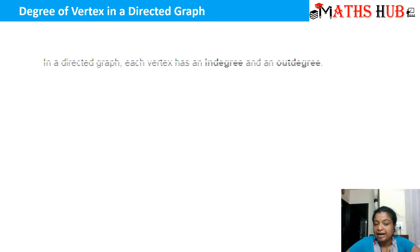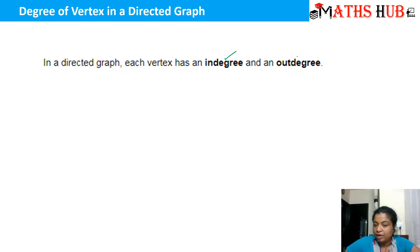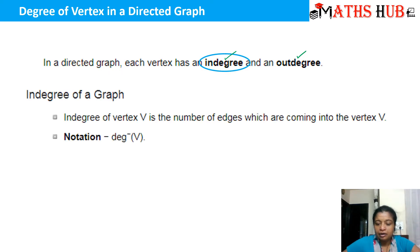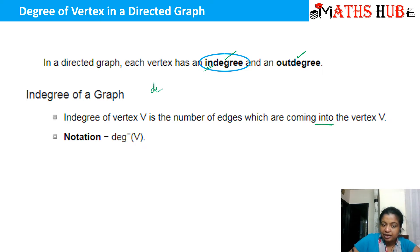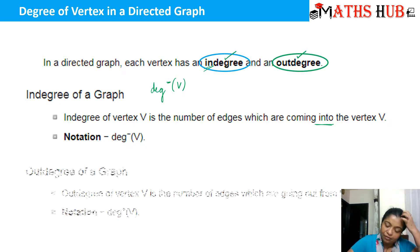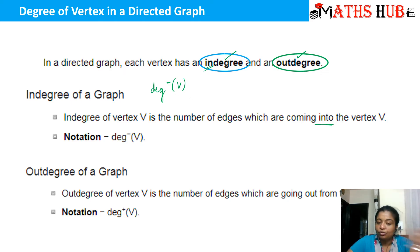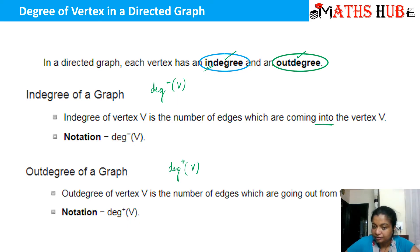What is the concept of degree in case of a directed graph? In a directed graph, the degree has two meanings: in-degree and out-degree. In-degree means the number of edges which are coming into the vertex V, denoted as deg⁻(V). Out-degree means the number of edges which are going out from that vertex, denoted as deg⁺(V). The minus sign refers to edges moving into the vertex, and the plus sign refers to edges going out.